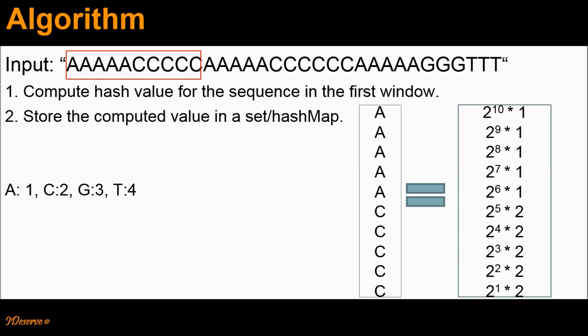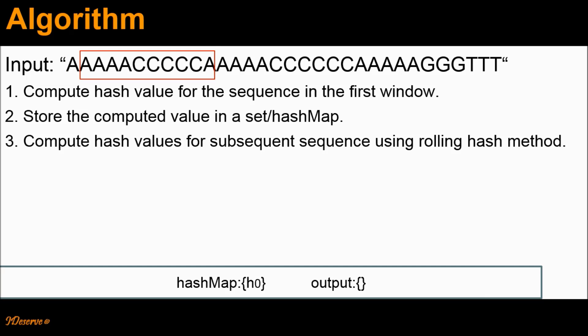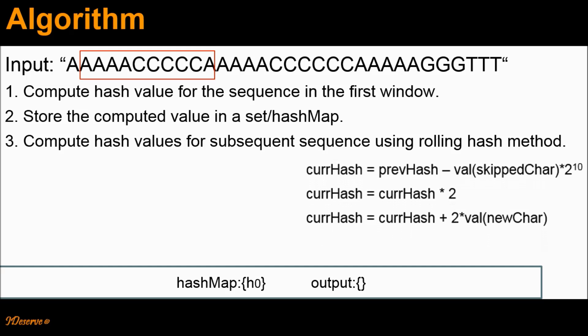And that would have a weight of 2^9, plus and so on till 2^1 × 2, where 2 is the value of the last character C and 2^1 is the weight of the last character. Once we compute the hash value for the sequence in the first window, we store this value as h0 in the hash map. For the next sequence, we compute the hash value using the rolling hash method: current_hash = previous_hash − (value_of_skipped_character × 2^10). The skipped character would be the first letter A. Then current_hash = current_hash × 2, and finally current_hash = current_hash + (2 × value_of_newly_added_character).